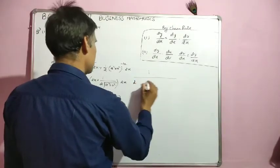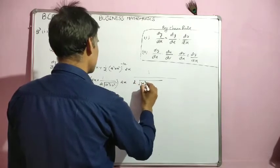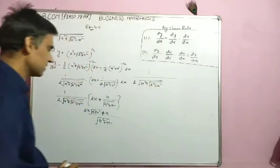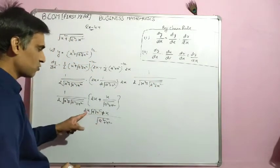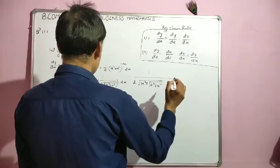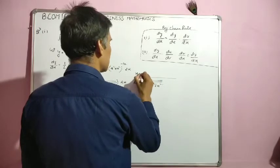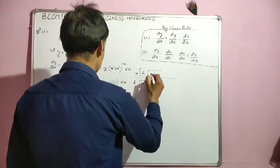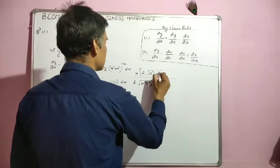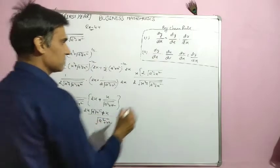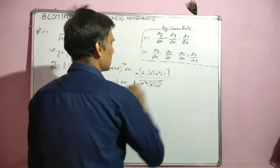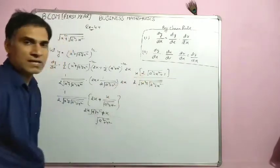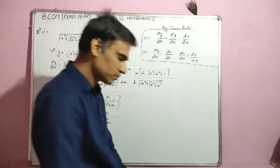1/(2) × (x² + a² + x²) raised to −1/2, into x common ले लेते हैं। तो हमारे पास आएगा: x [2(a² + x²) + 1] / (a² + x²)। यह हमारा finally answer हो जाएगा। चलिए next part solve करते हैं।